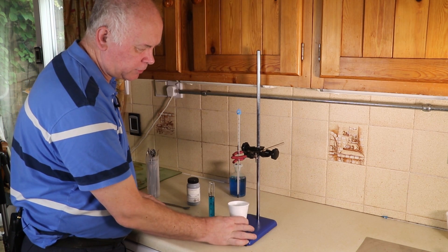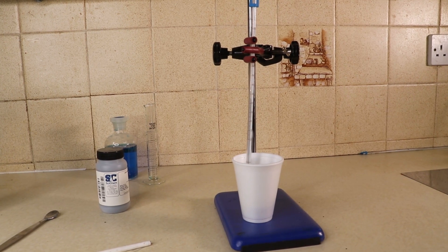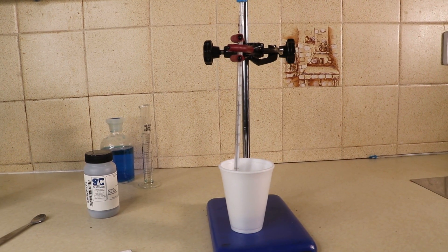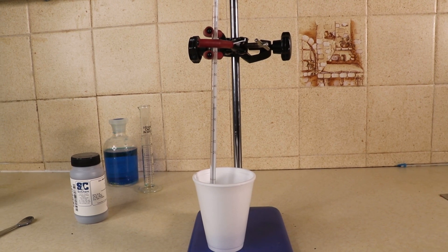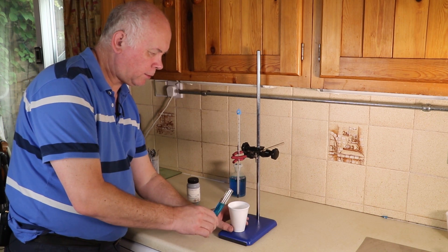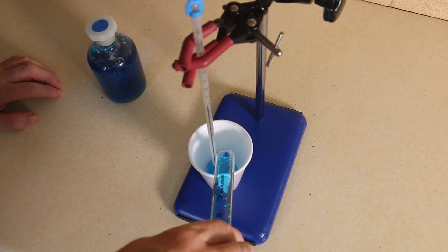We're going to use a polystyrene cup because that's going to keep the heat in. I've got a thermometer which goes up to 100 because I'm expecting a large temperature change. Let's put in the copper sulfate.